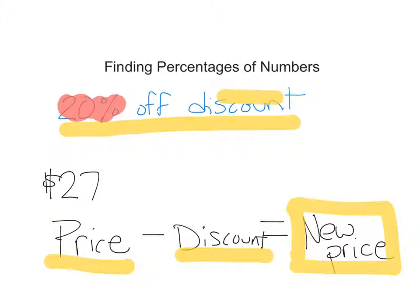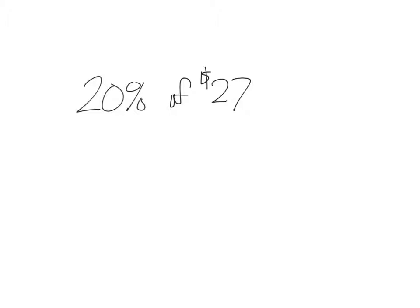To solve this problem, 20% of $27, we can follow a few simple steps. If we can find what 1% equals, finding any other percentage is quite simple. You would just take that number and multiply that number by any other percent. So, if I wanted 7%, I could multiply by 7. If I wanted 20%, I could just multiply by 20.